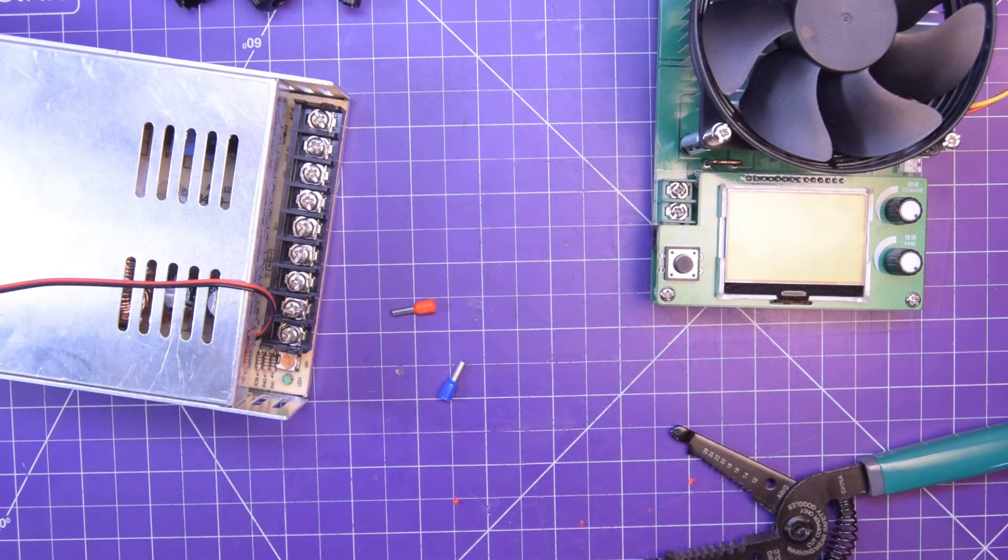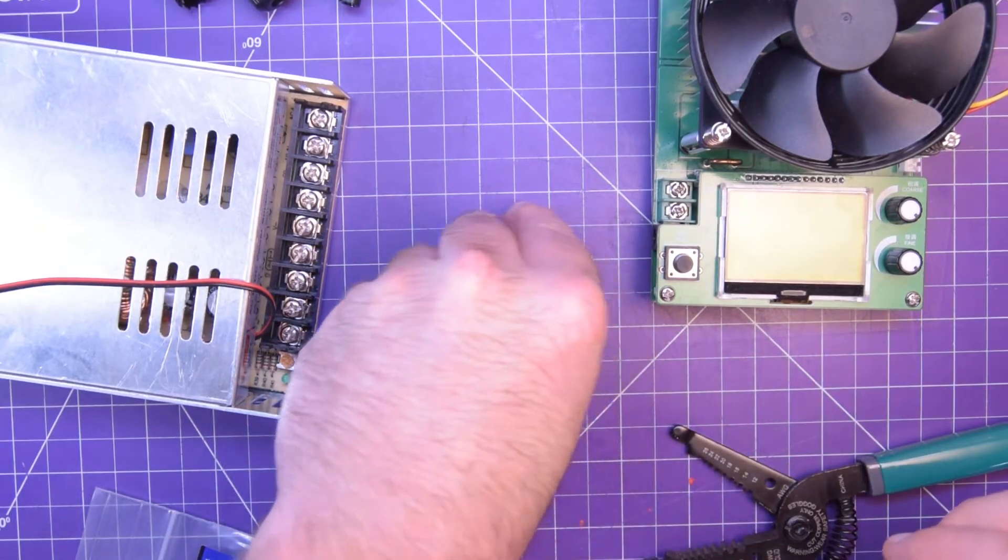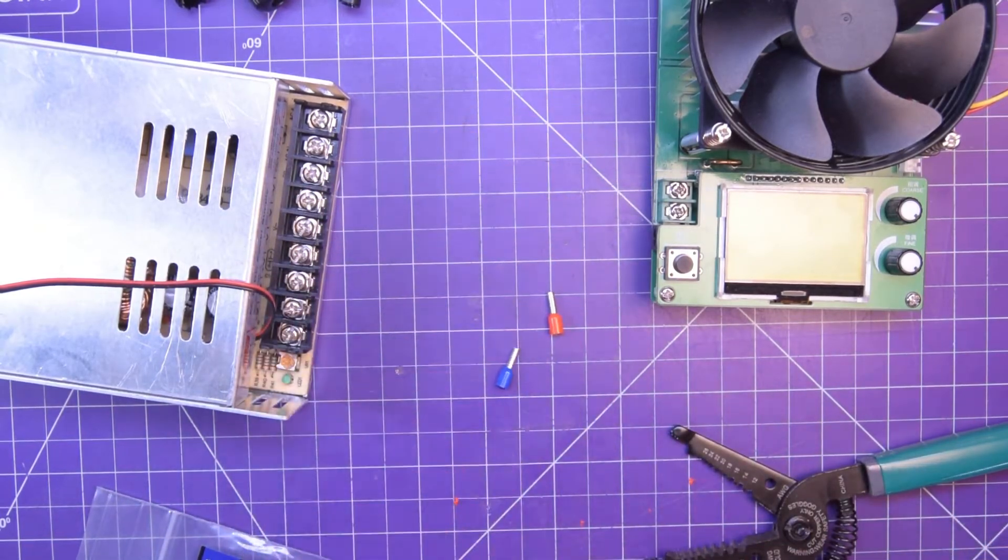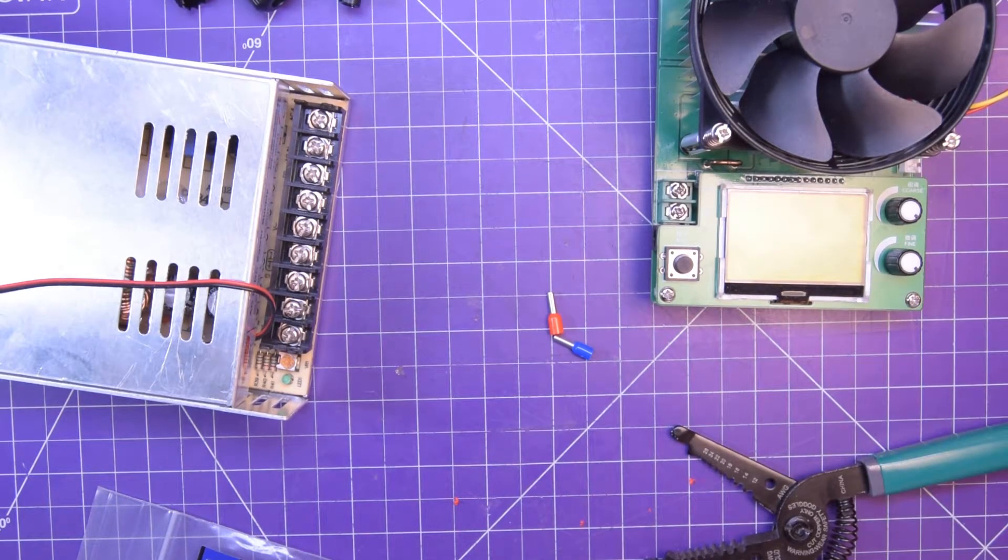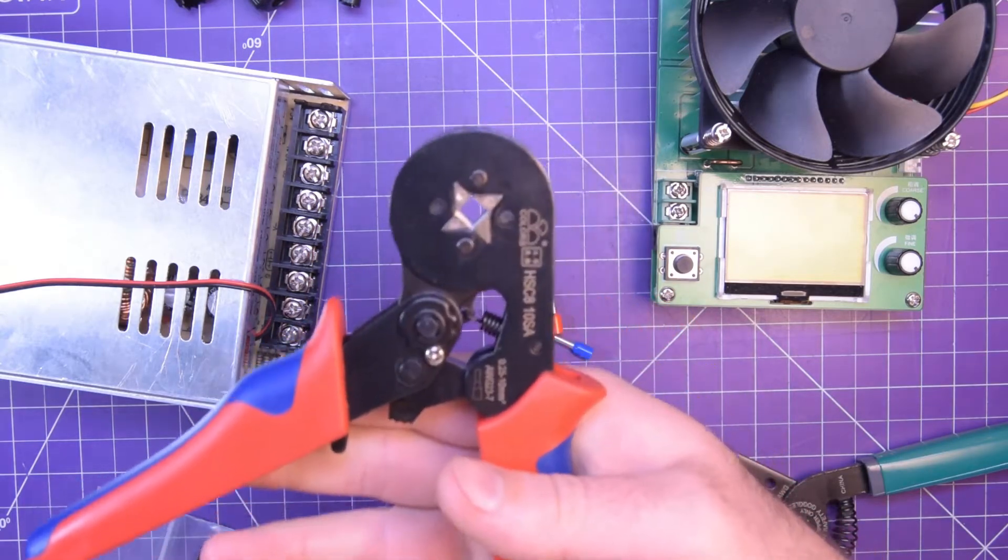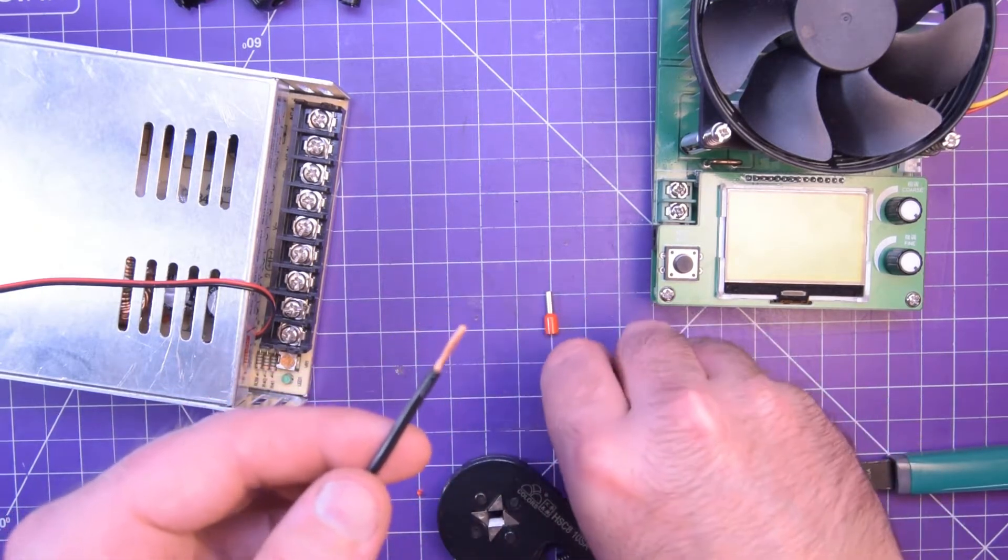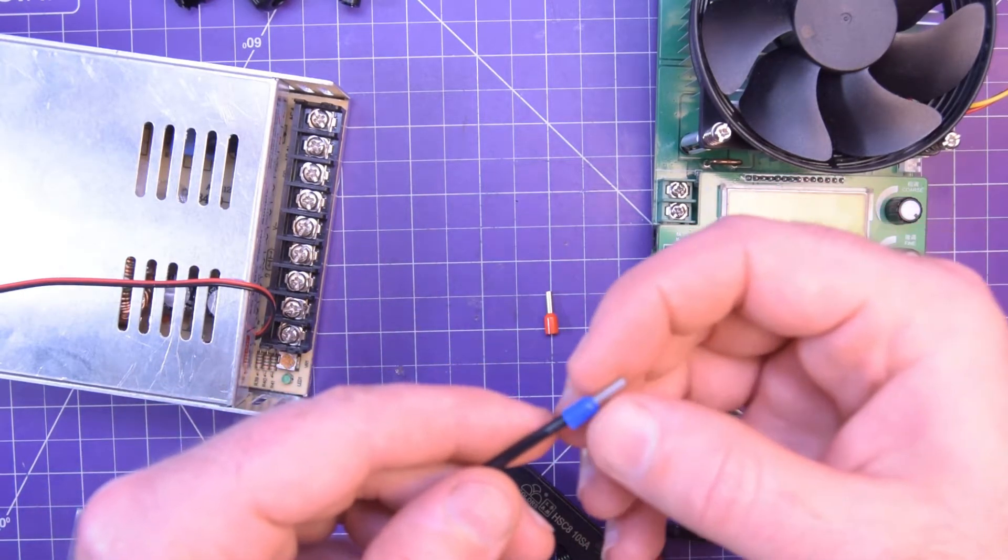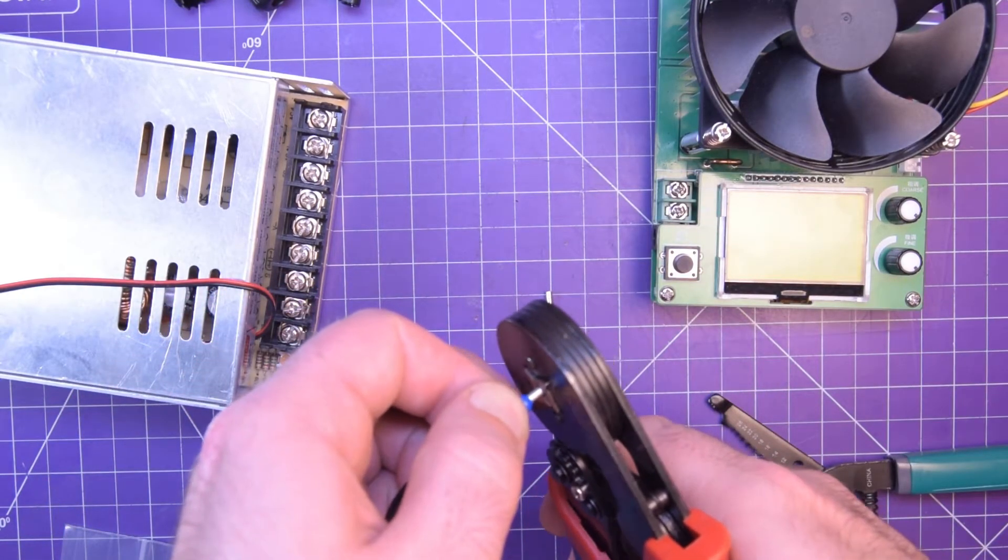So the alternative I think is to use these ferrules. If I just crimp the ferrules on, I should be able to just jam it inside here. It won't make as good of a connection, but it'll still make a reasonable connection. I don't think we're going to drop any voltage on those connections. And I do have the proper crimper for the ferrules. So I've already pre-stripped my wire back here. I'd like to strip it back a little bit further than usual for the ferrules because then it can just chop the end off after.